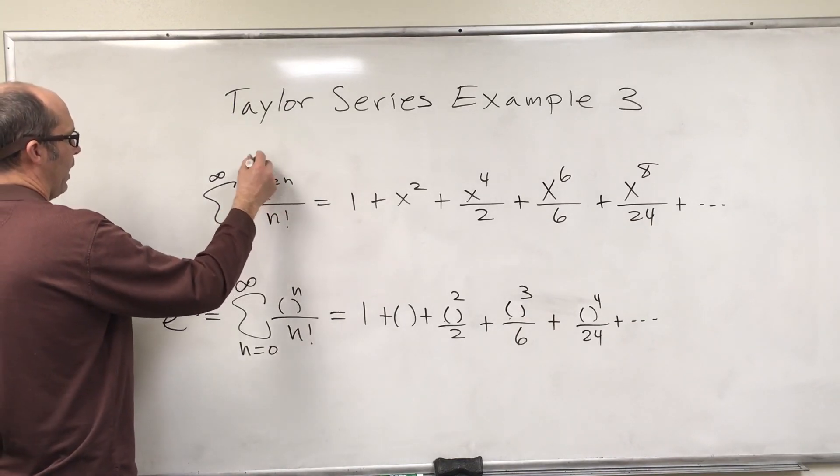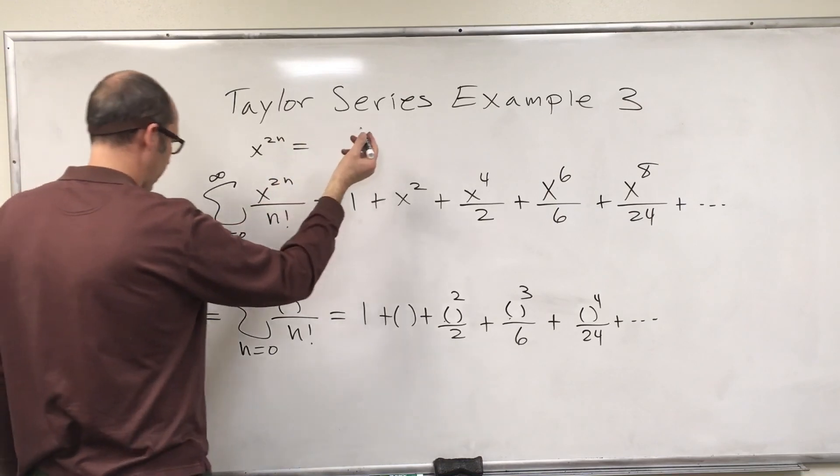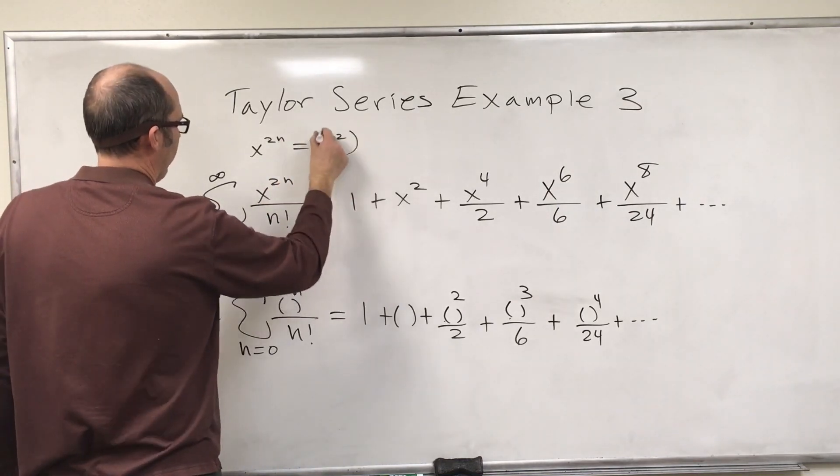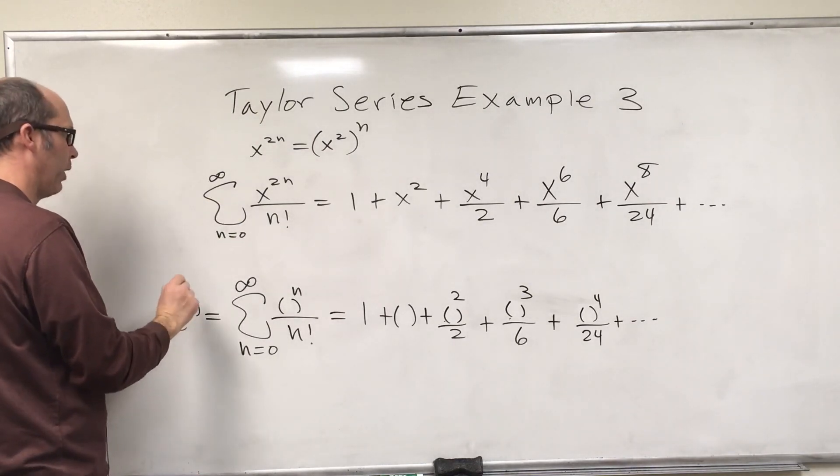Another thing to notice here is that x to the 2n, you can write this as x squared to the n. That's my tip off that I want to put in x squared here.